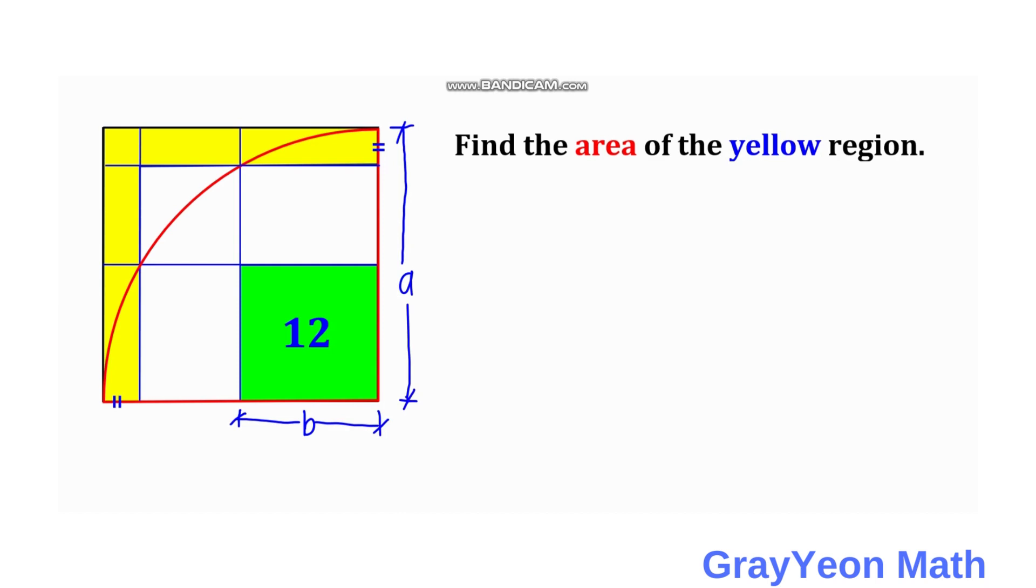So since we are after the area of the yellow, the area of the yellow is actually the area of this largest square. And we need to subtract this area, this area of this smaller square to find the area of the yellow region.